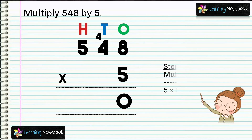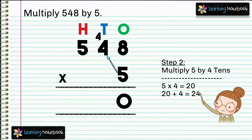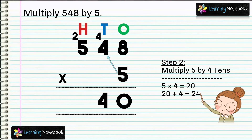In step 2, multiply 5 by 4 tenths. 5 into 4 equals to 20. But we also have 4 as carry due to regrouping in step 1. So we will add it. 20 tenths plus 4 carry equals to 24 tenths. Now students, we need to regroup 24 tenths. 24 tenths means 2 hundredths and 4 tenths. So let's carry 2 to the hundredths place and 4 comes in the answer.